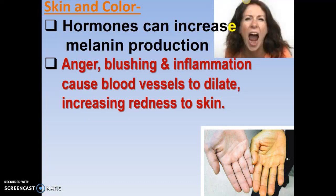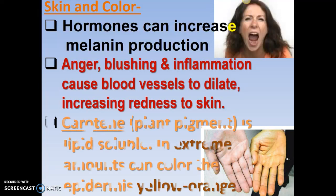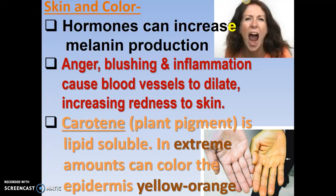There are two hands shown below. One is a person who eats a lot of carrots or sweet potatoes — something with a lot of beta-carotene. Beta-carotene is lipid soluble; it's a plant pigment that will gather in your extremities, in your hands.